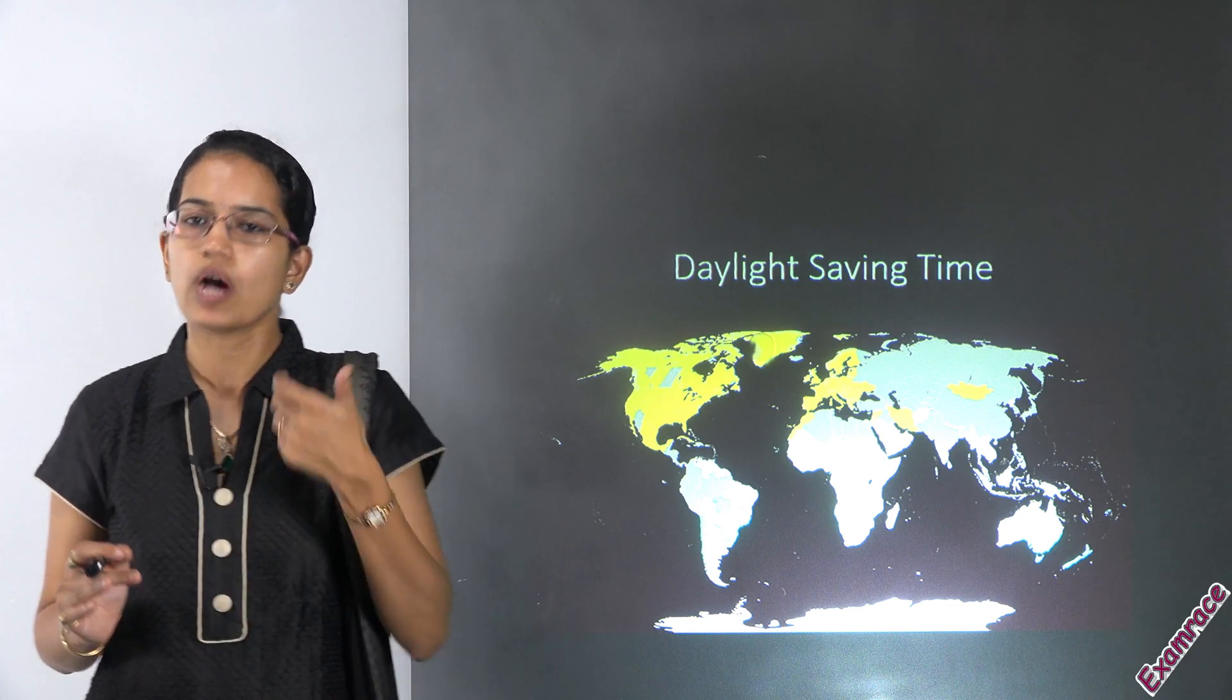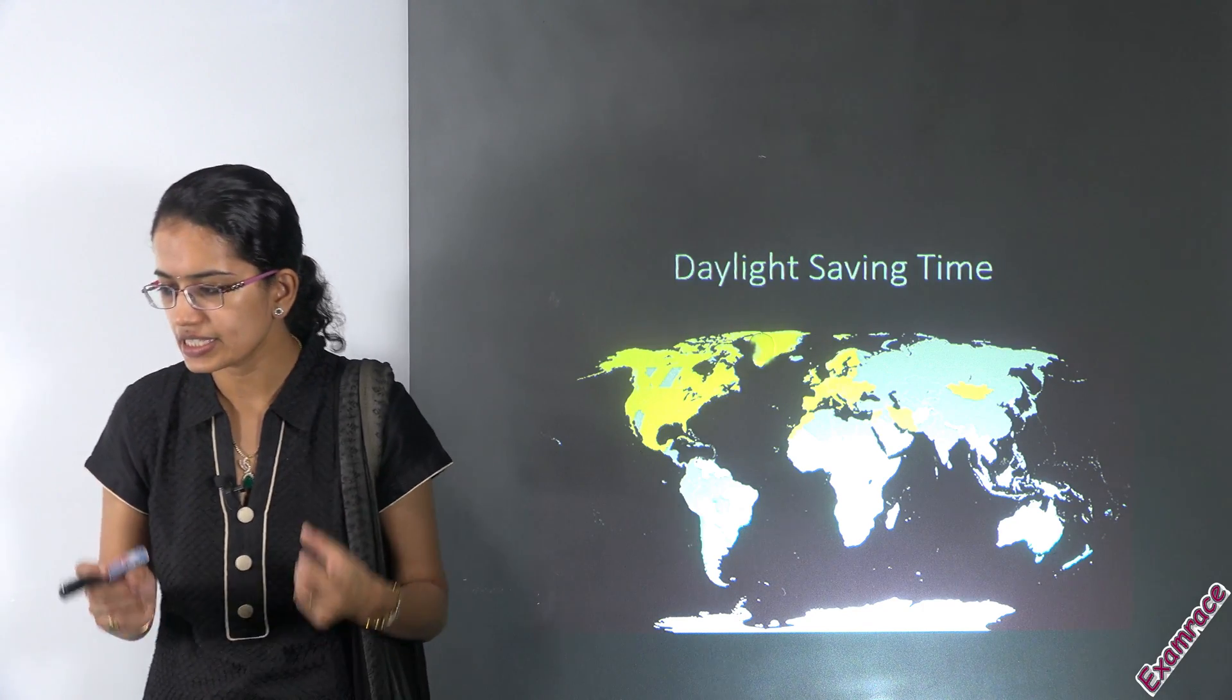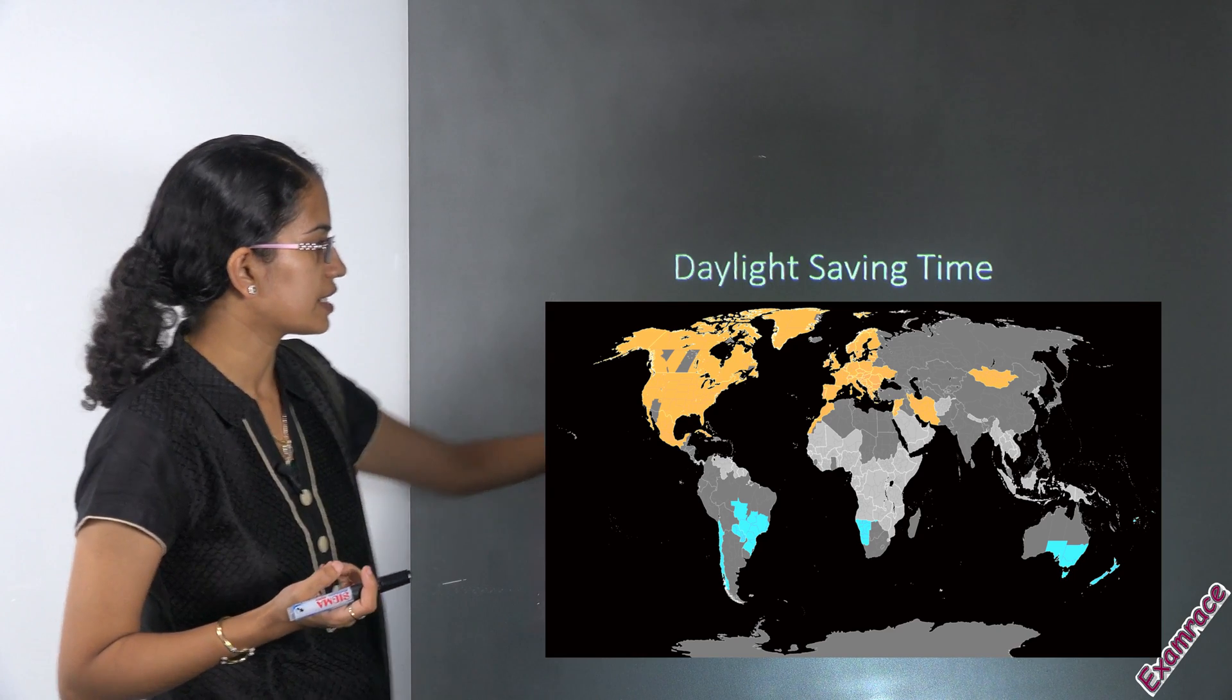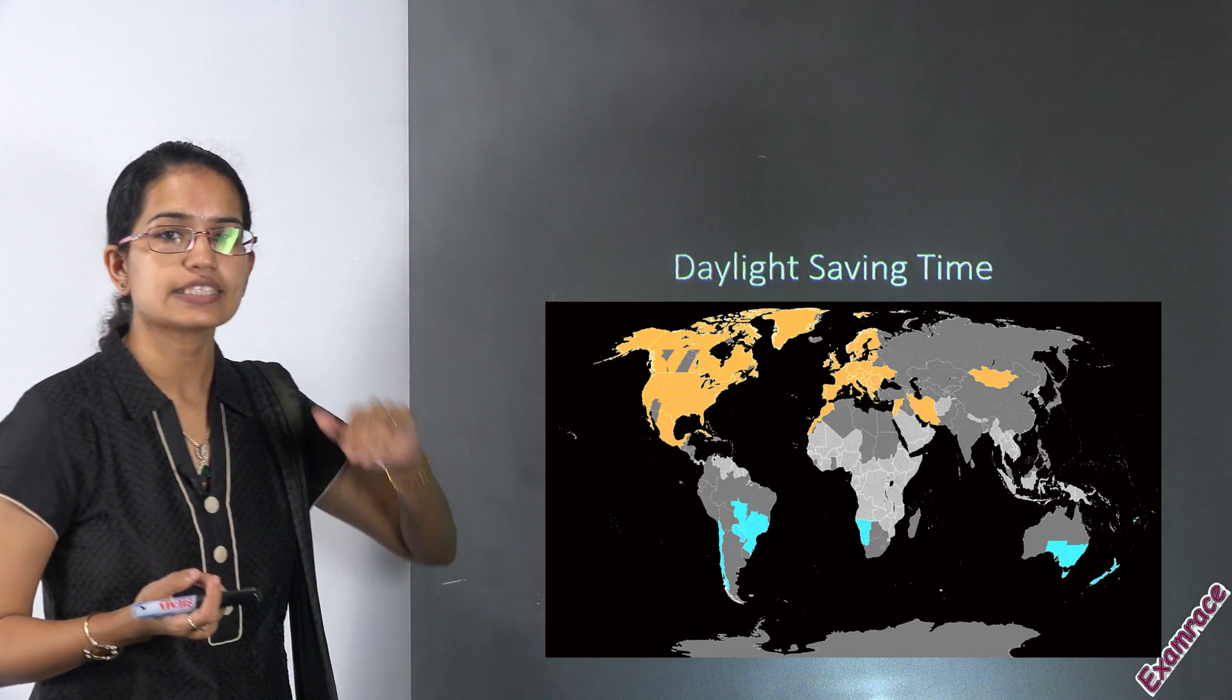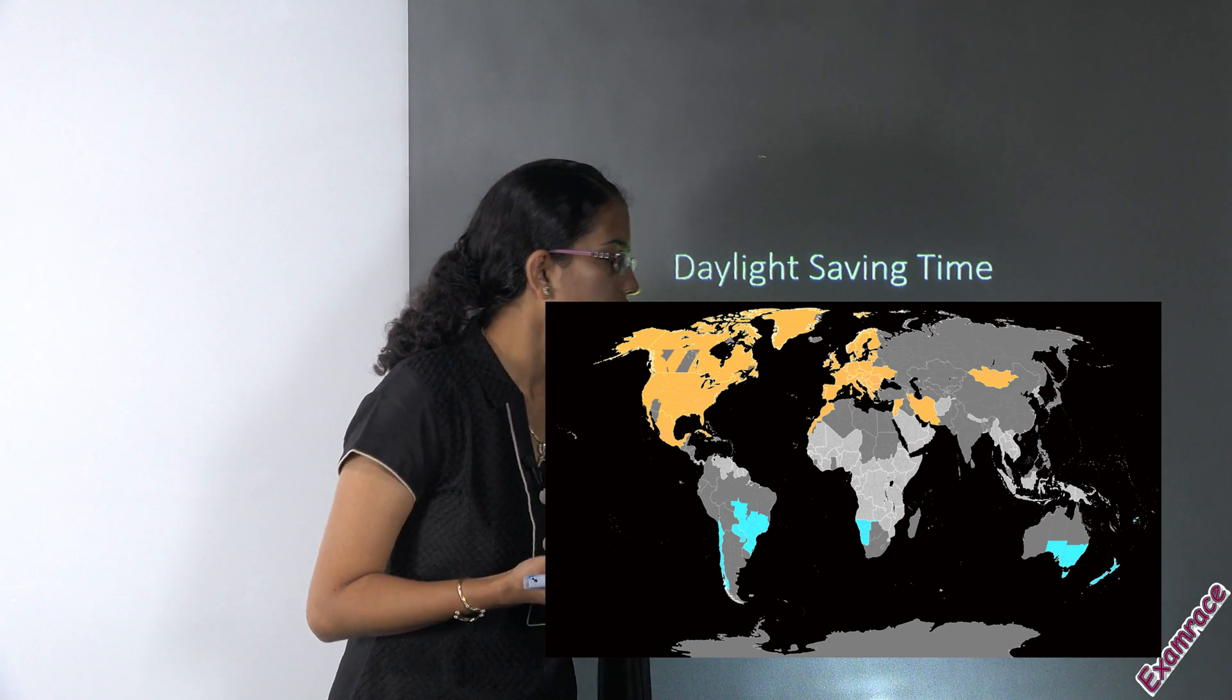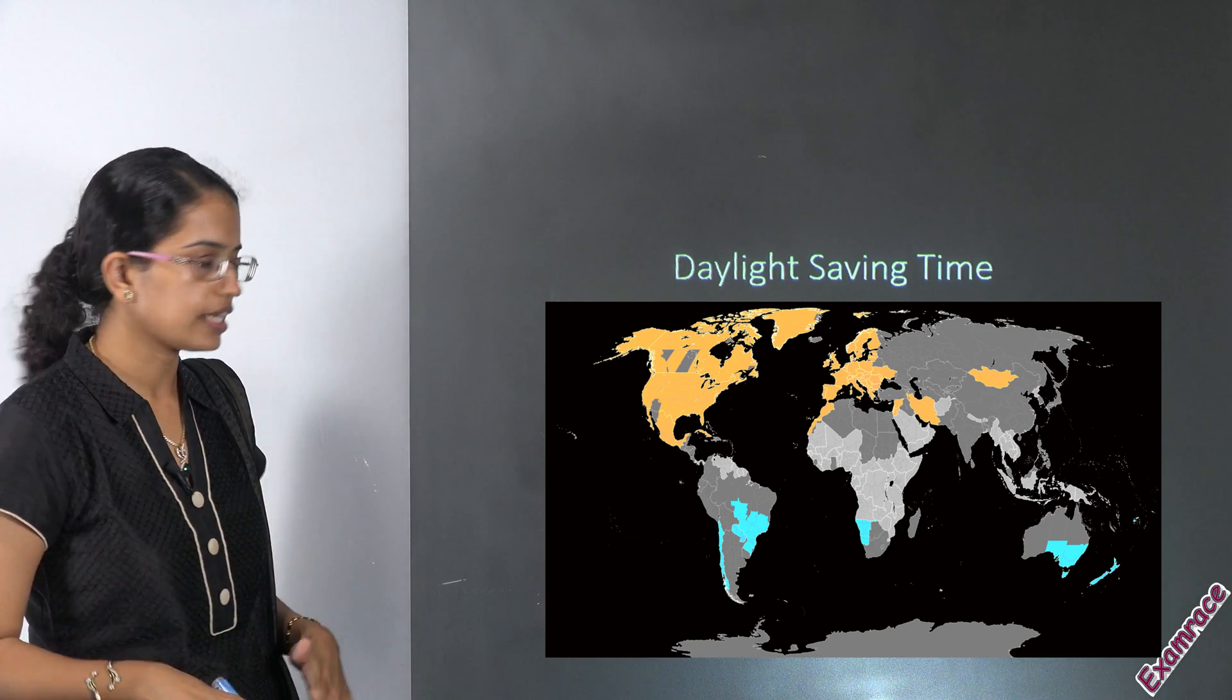Most cases it's 1 hour shift but in some cases we have just 30 minutes shift. Now if you look onto this map you have the countries marked in yellow. These are the countries that observe daylight saving in the northern hemisphere. The countries marked in blue observe daylight savings in the southern hemisphere.